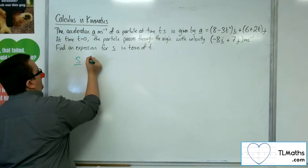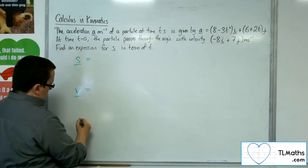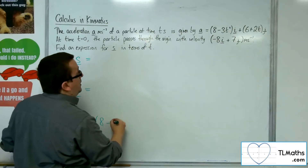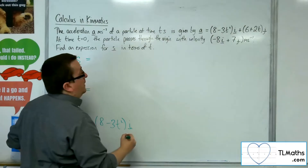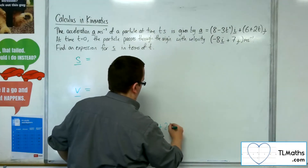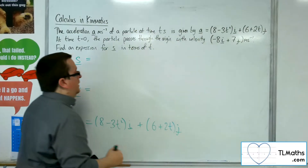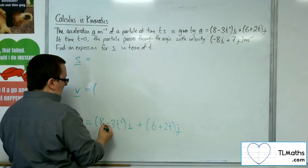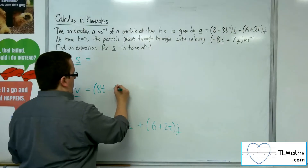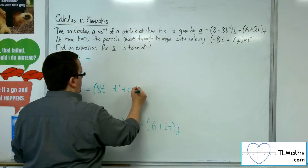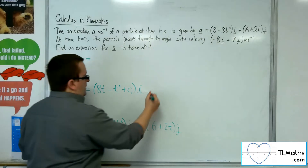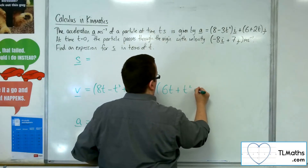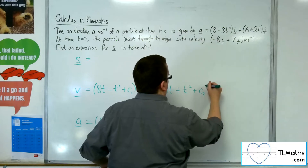We've got s, v, and a. The acceleration has been given to us: 8 minus 3t squared i plus 6 plus 2t j. What I want to do is integrate my way up to the velocity. So I'm going to get 8t take away t cubed plus some constant c1 for the i component. Then integrating the j component, I've got 6t plus t squared plus another constant c2 j.